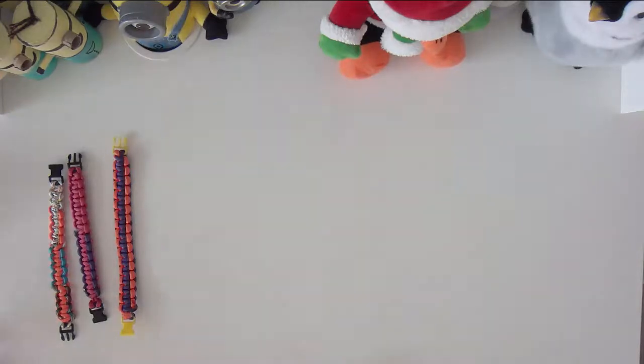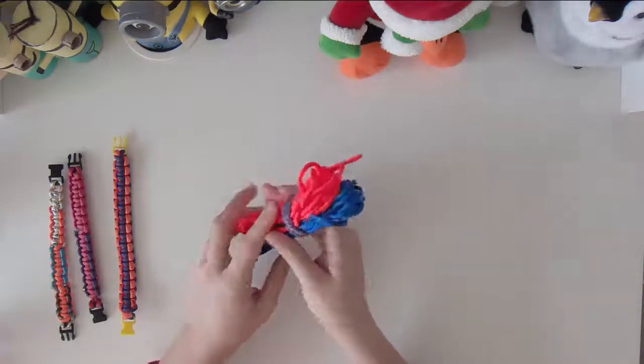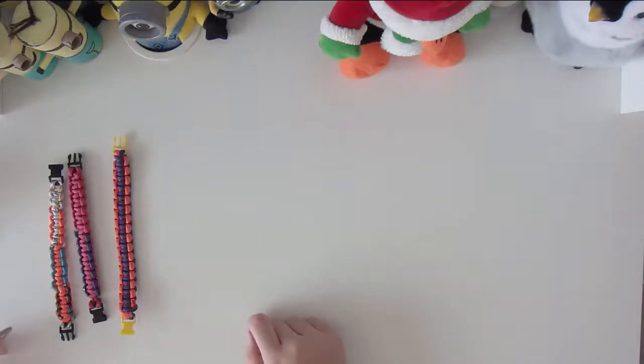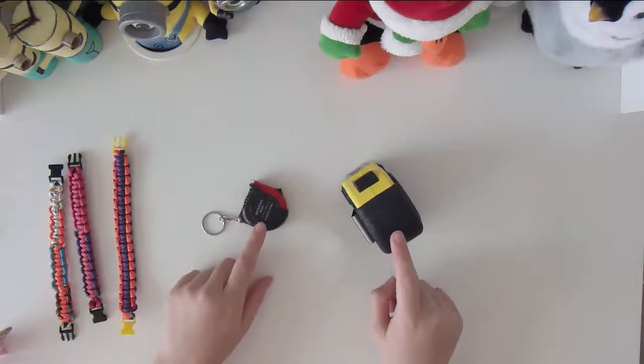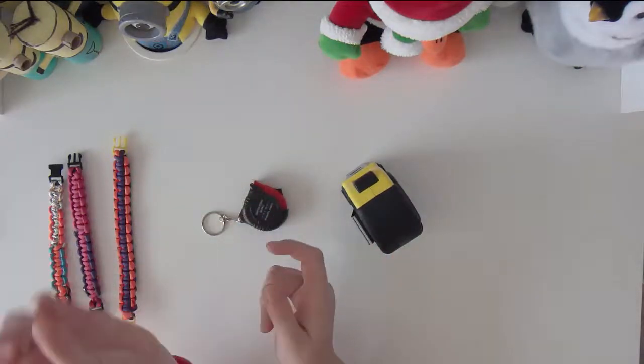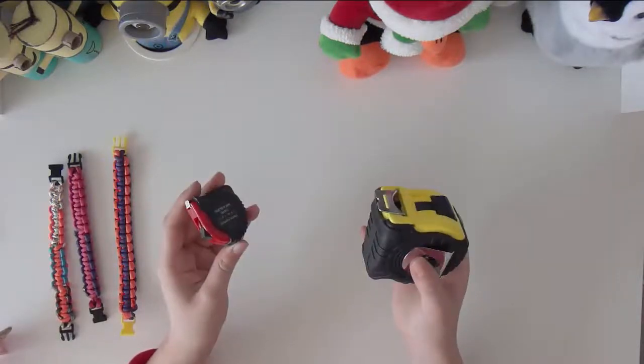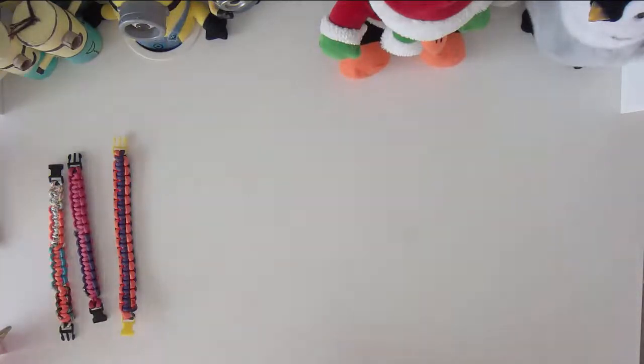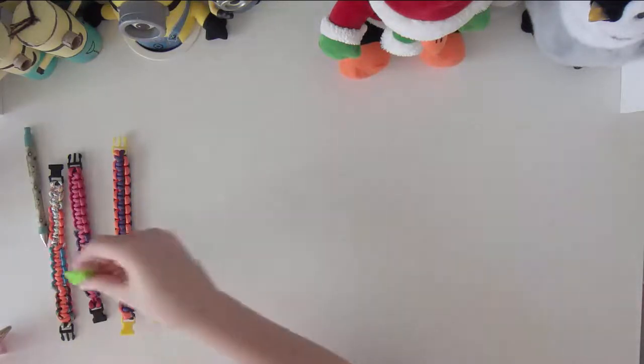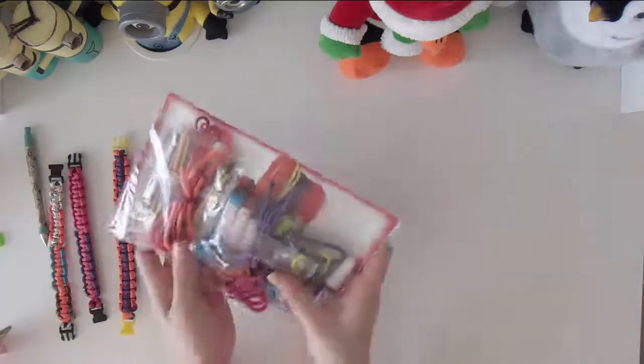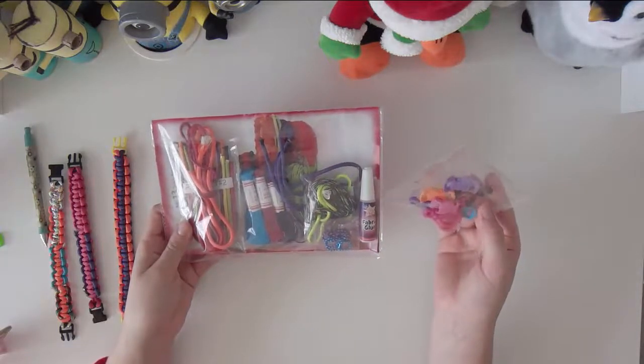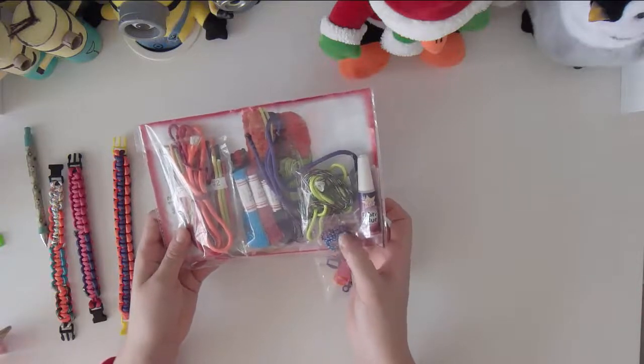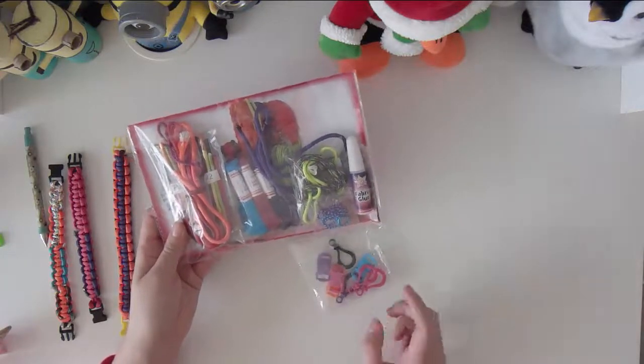What you'll need is paracord rope, which I found at Walmart in the sewing section, hot glue or permanent glue, measuring tape to measure your wrist size and the rope, scissors, and clips, which I found in a kit at Hobby Lobby with different types of ropes and fabric glue.